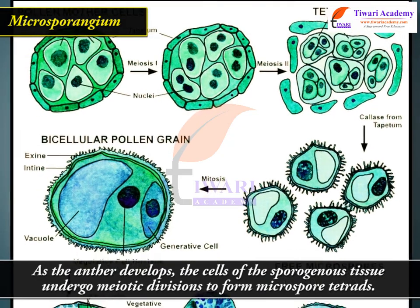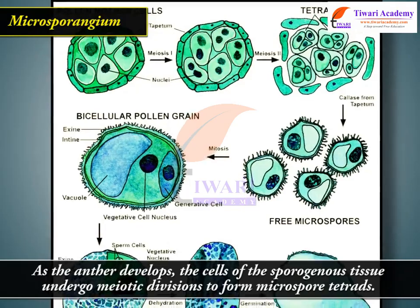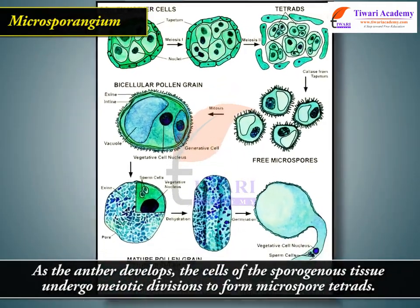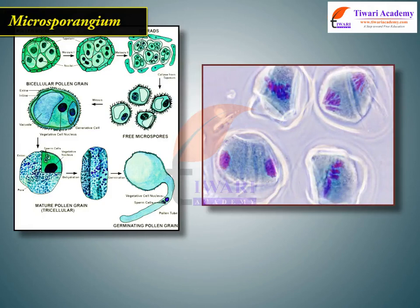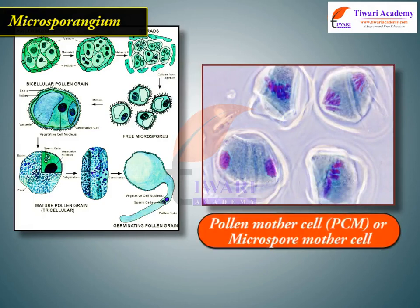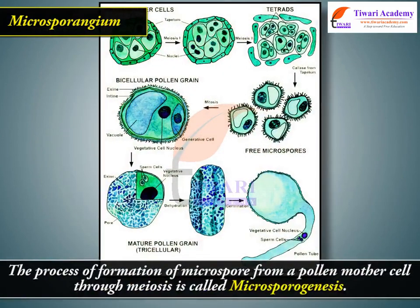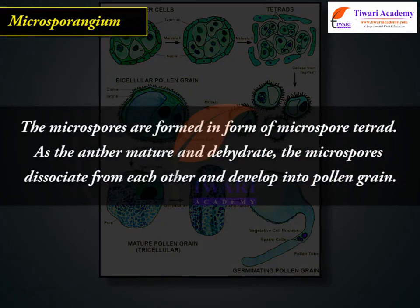As the anther develops, the cells of the sporogenous tissue undergo meiotic divisions to form microspore tetrads. Each cell of the sporogenous tissue is known as a pollen mother cell or microspore mother cell. The process of formation of microspores from a pollen mother cell through meiosis is called microsporogenesis. The microspores are formed in the form of microspore tetrads. As the anther matures and dehydrates, the microspores dissociate from each other and develop into pollen grains.